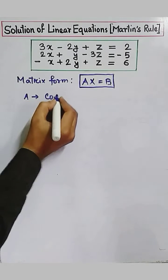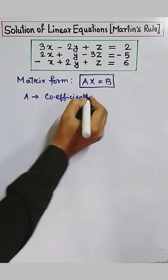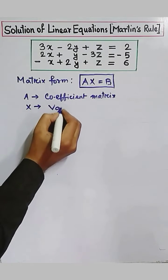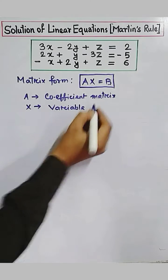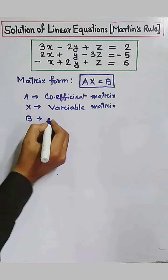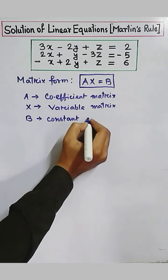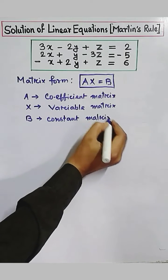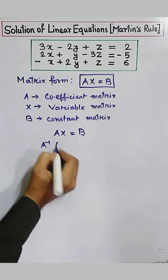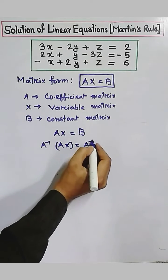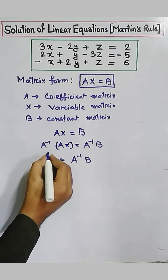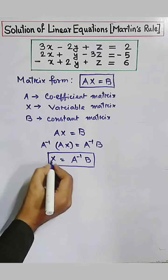A is the coefficient matrix. x is the variable matrix. And b is the constant matrix. It is given that Ax equals b, and multiplying both sides by A inverse, on the left hand side x will come, and on the right hand side A inverse b.